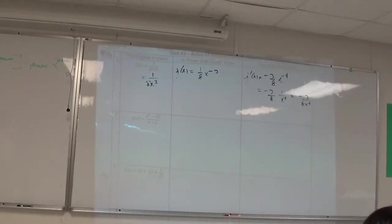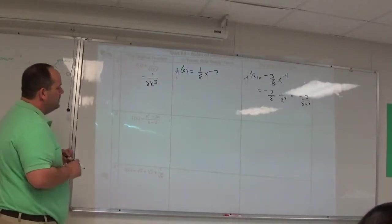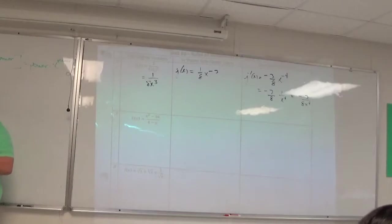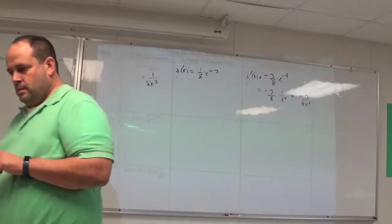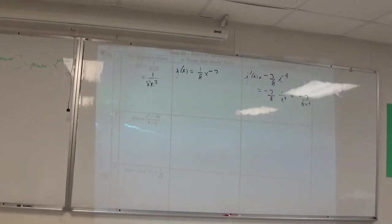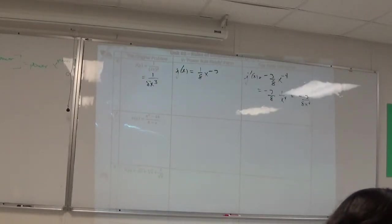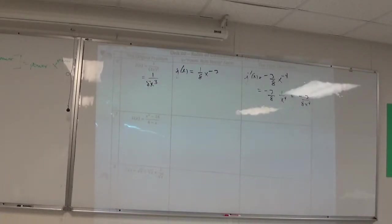So you're going to have negative 3/8 x to the negative 4 or even better, negative 3/8 times 1 over x to the fourth, negative 3 over 8x to the fourth. If you're getting beaten up by the algebra right now, don't take it personally. It's going to get better. I promise, it is normal to be getting beaten up by algebra right now. See what you can do at 7 to 9.